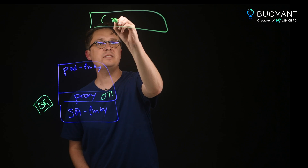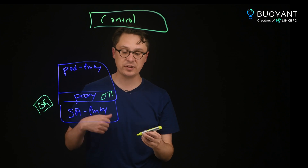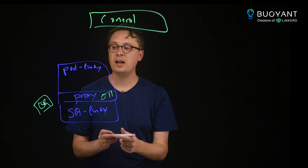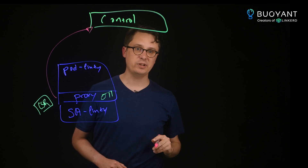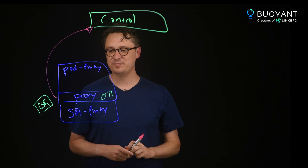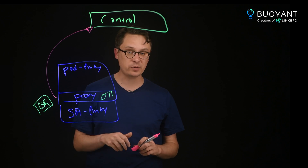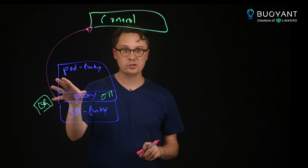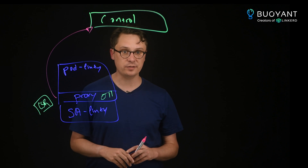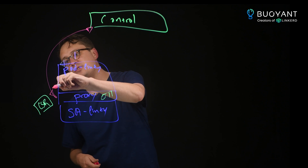Linkerd's control plane is used to issue certificates to the proxy. As the proxy starts up, it generates all this information and sends it to the control plane requesting a certificate. The control plane uses the service account token sent along with that request to validate that the certificate signing request matches all of the information using the Kubernetes API server. If that's all correct, it returns with a certificate.